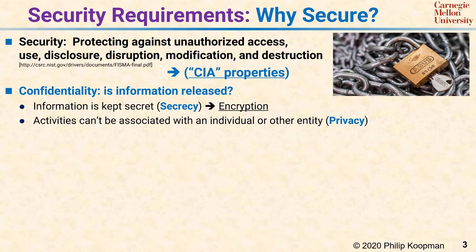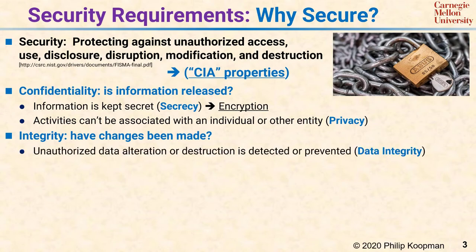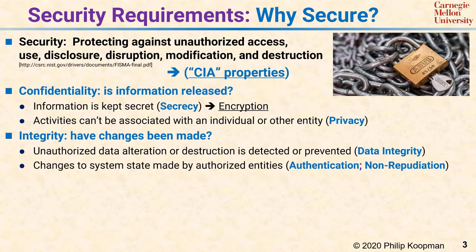The I in CIA is integrity, which has to do with making sure that only appropriate changes are made to a system. Preventing or detecting unauthorized data alteration or destruction is called preserving data integrity. For a thermostat, it is usually important to ensure that new firmware downloads have not been tampered with to avoid introducing malicious code. Ensuring that changes to system state can only be made by authorized entities is called authentication.